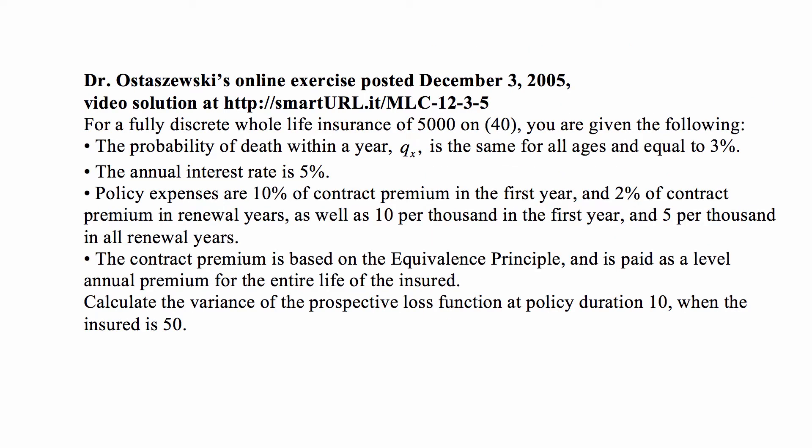For a fully discrete whole life insurance of 5000 on a 40-year-old, you are given the following: The probability of death within a year, qx, is the same for all ages and equal to 3%.